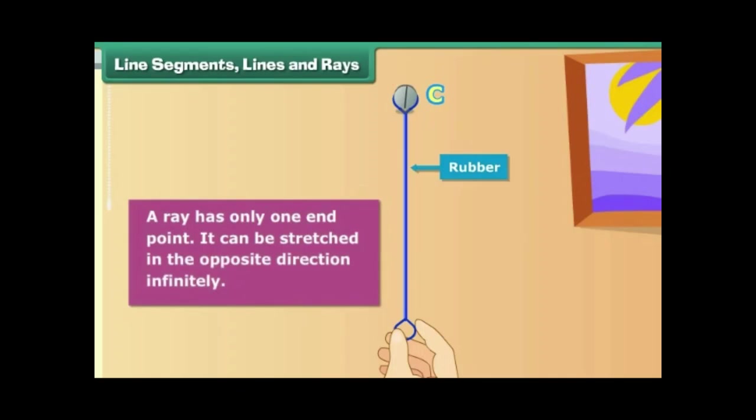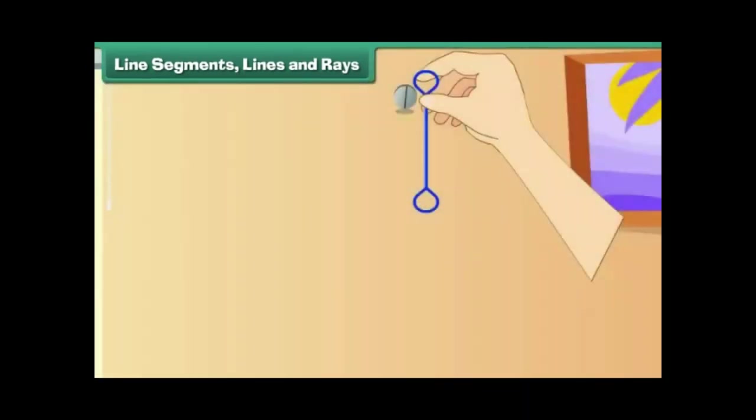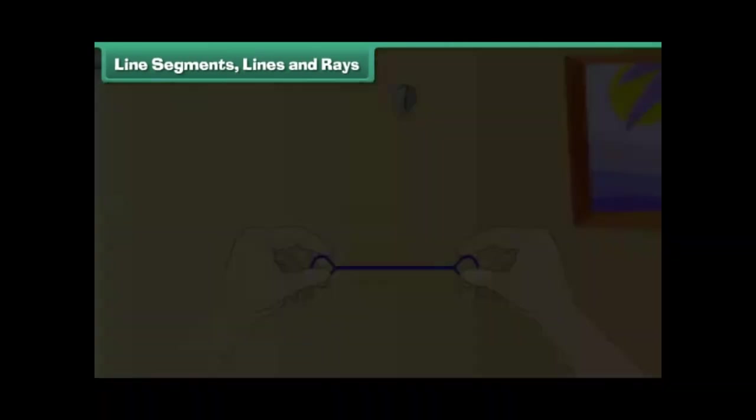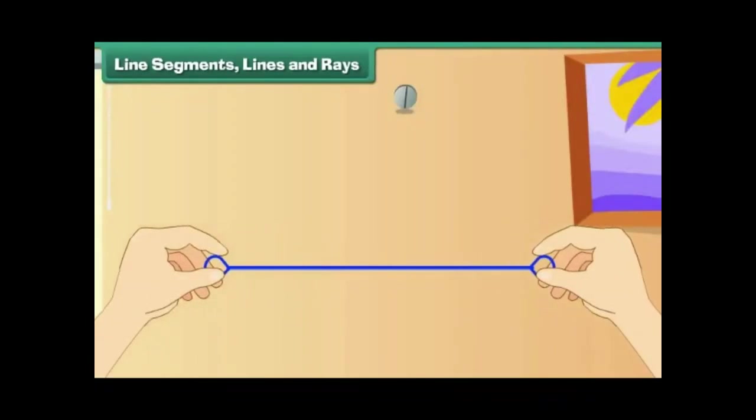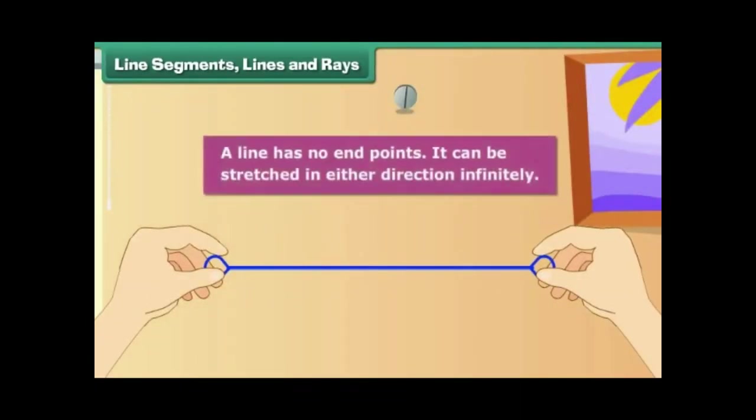A ray has only one endpoint. It can be stretched in the opposite direction infinitely. Let us now remove the nail and stretch the rubber in the other direction. We now have a line. A line has no endpoints.